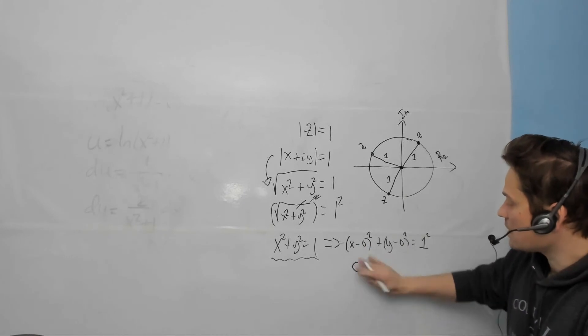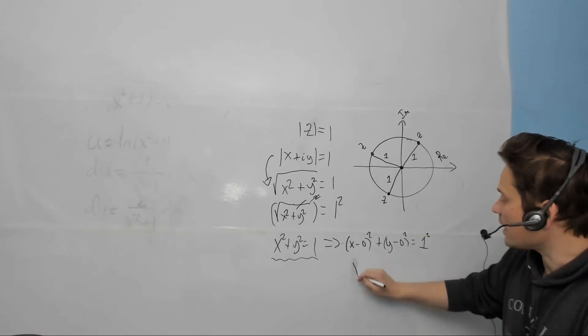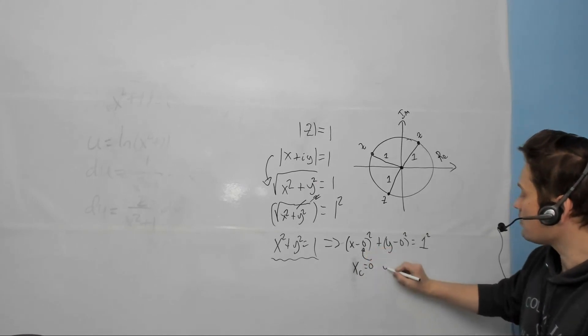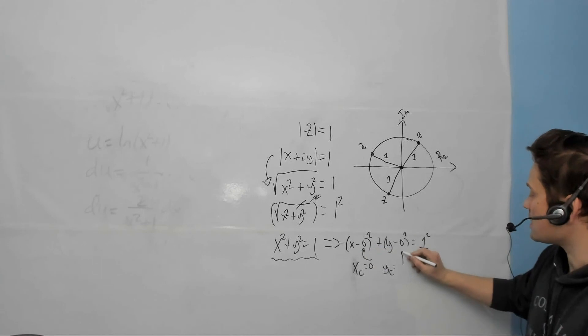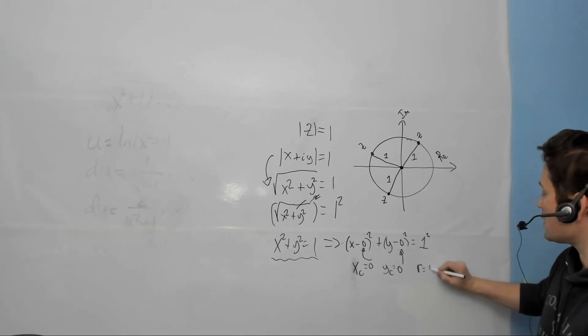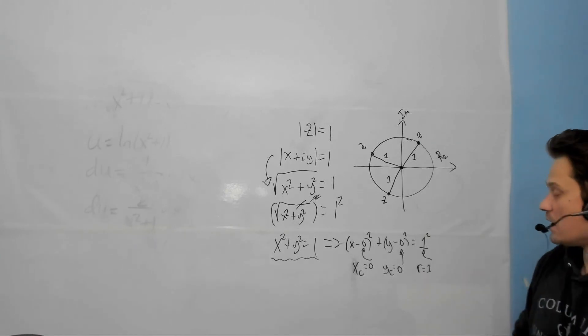So in other words, I'm going to write it this way as an example. Okay, I will say that the x-coordinate of the center is 0. That's this value right here. And the y-coordinate of the center is 0. That's this value right here. And the radius is 1, which is this value right here.